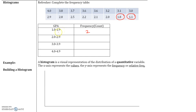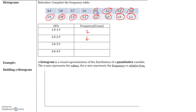The reason we know we include 1.9 is because the next class starts at 2. How many students have a GPA between 2.0 and 2.9, including 2.0 and 2.9? We have 1, 2, 3, 4, 5, and 6. For 3.0 and 3.9: 1, 2, 3, 4, 5, 6, and 7. And we have one student who has a GPA of 4.0 or above.